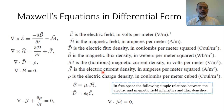J is the electric current density. The electric current density is something physically real — if we have a charge distribution and the charge distribution is moving, there will be an equivalent electric current. So electric current density has units of ampere per meter squared. And rho is the electric charge density, i.e., the volume charge density.